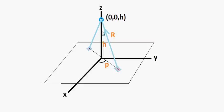We're just finding a point above the plane somewhere. Any point we want above the plane, we just shift our coordinate axis so that point has coordinates (0, 0, H).